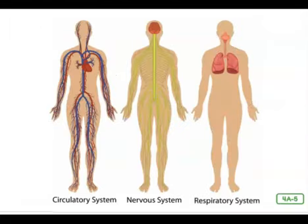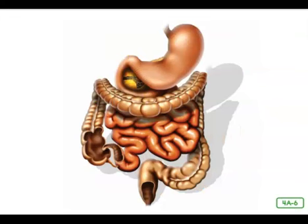What does the circulatory system do? It circulates — or moves — your blood all around your body. Your heart and blood, made up of cells and tissues, are the organs of your circulatory system. The respiratory system includes your lungs, which control your breathing. The nervous system sends messages along the spinal cord to the brain. The spinal cord and the brain are both made up of nervous tissue full of tiny nerve cells.